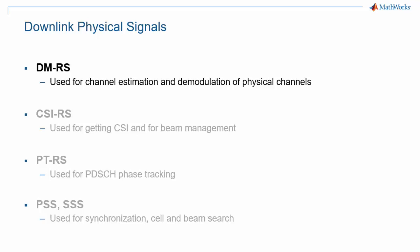CSI-RS, or Channel State Information Reference Signals, help the receiver provide estimates of a channel that can be exploited for resource allocation, beamforming, and beam management. PTRS, or Phase Tracking Reference Signals, are used for phase tracking, which is of particular importance in millimeter wave transmission where phase noise is more prevalent. Finally, PSS and SSS, the primary and secondary synchronization signals, play a key role in synchronization and cell search procedures as explained in detail in another episode of this series.